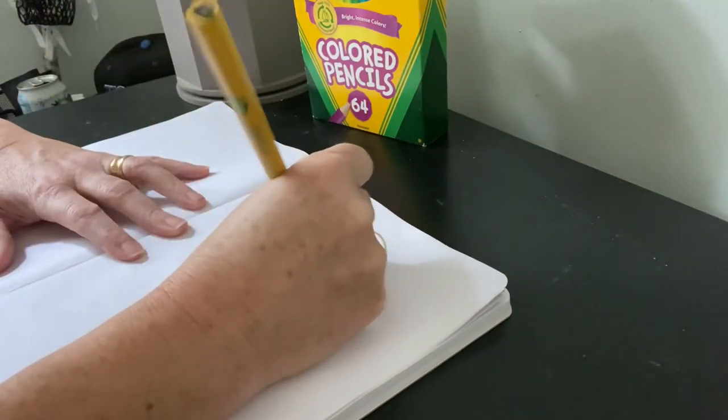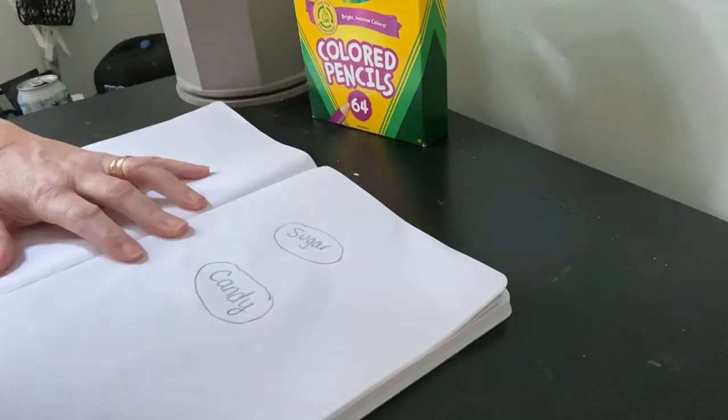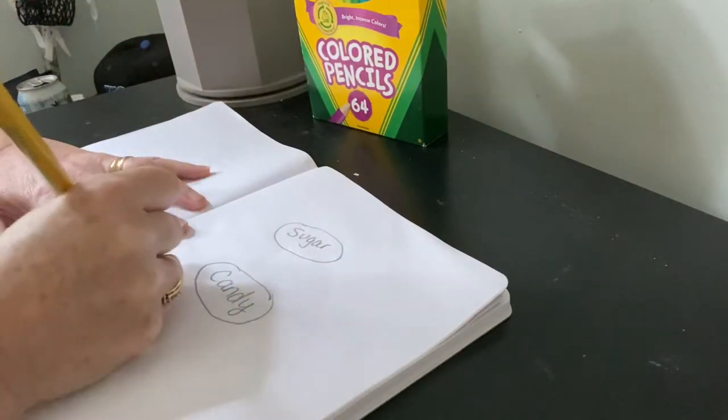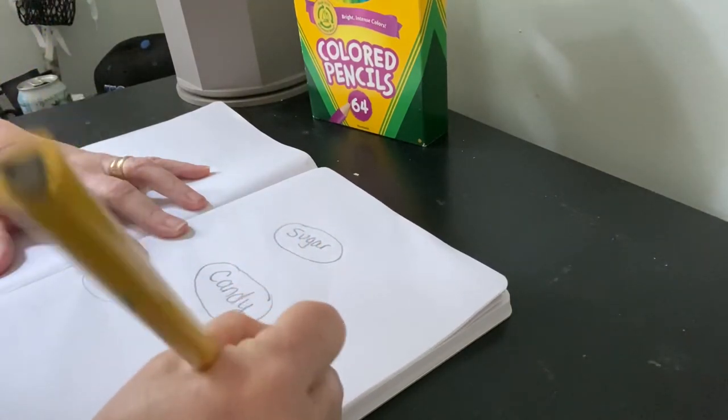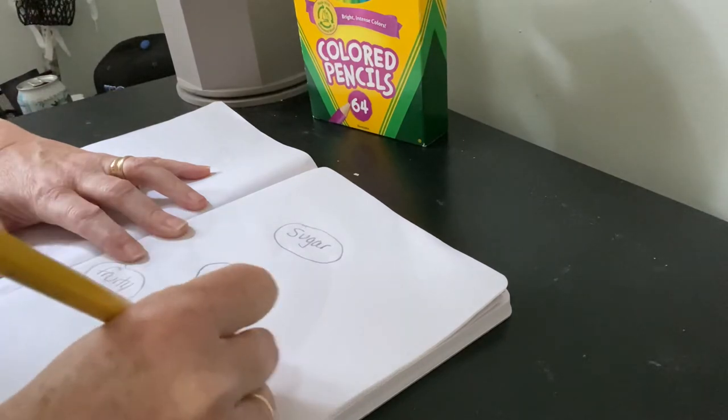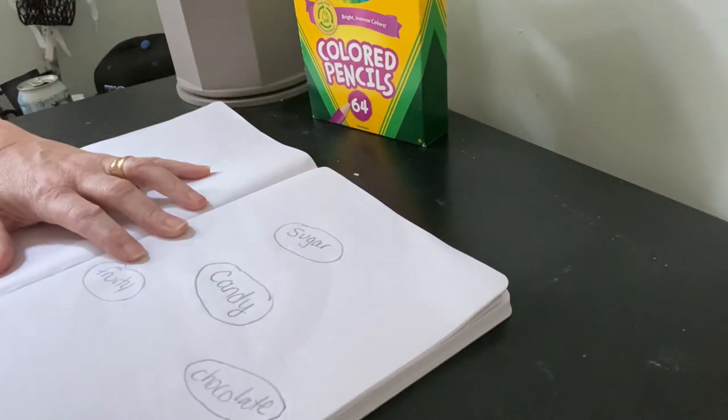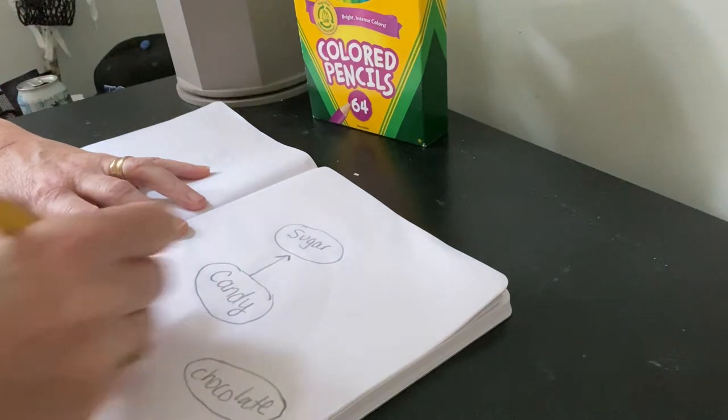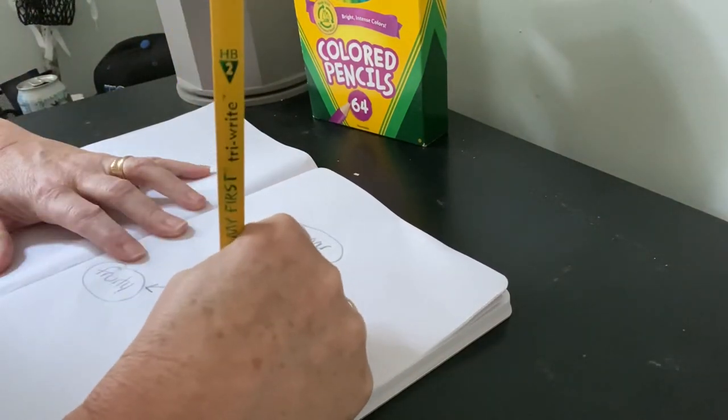So I know that candy has sugar. I know that there are fruity kinds of candy, and chocolate kinds of candy. And now that I have these words down, I want to start to think about how they're connected. And so I know that all candy has sugar. I can have fruity candy. I can have chocolate candy.